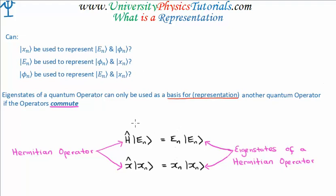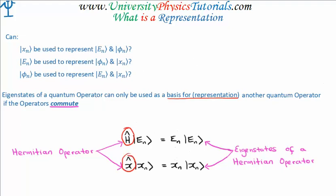Let's look at the two operators in question. We have the energy eigenvalue equation with our energy operator — the Hamiltonian — and the position eigenvalue equation with our position operator. The question is: does the Hamiltonian commute with the position operator? Mathematically, we write the commutator between the Hamiltonian and position operators. We act on an arbitrary quantum state: we apply the position operator first and then the energy operator, and subtract from that applying the energy operator first and then the position operator.